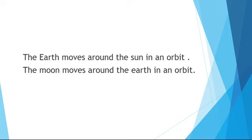Then we know that the earth moves around the sun in an orbit. And what about the moon? The moon moves around the earth in an orbit. The earth moves around the sun, but the moon moves around the earth in an orbit. Every planet has their own orbit.